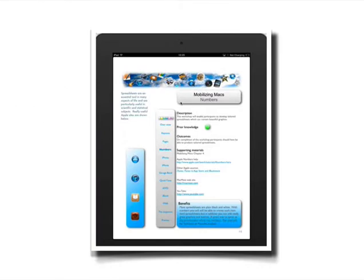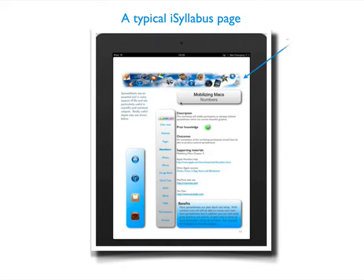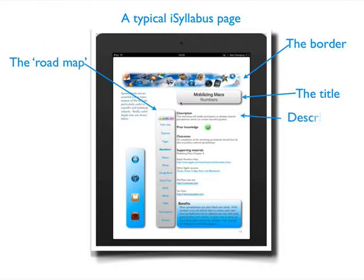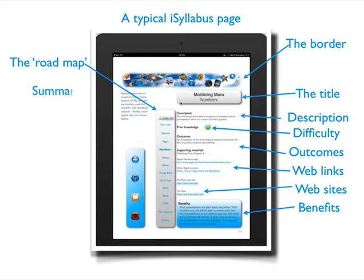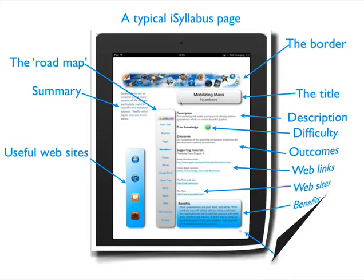Let's look at another one, and here we have it for Numbers. Once again we have the border, the title, the roadmap, the description, the difficulty, the outcomes, web links, websites, the benefits, summary, useful websites, and the page number.